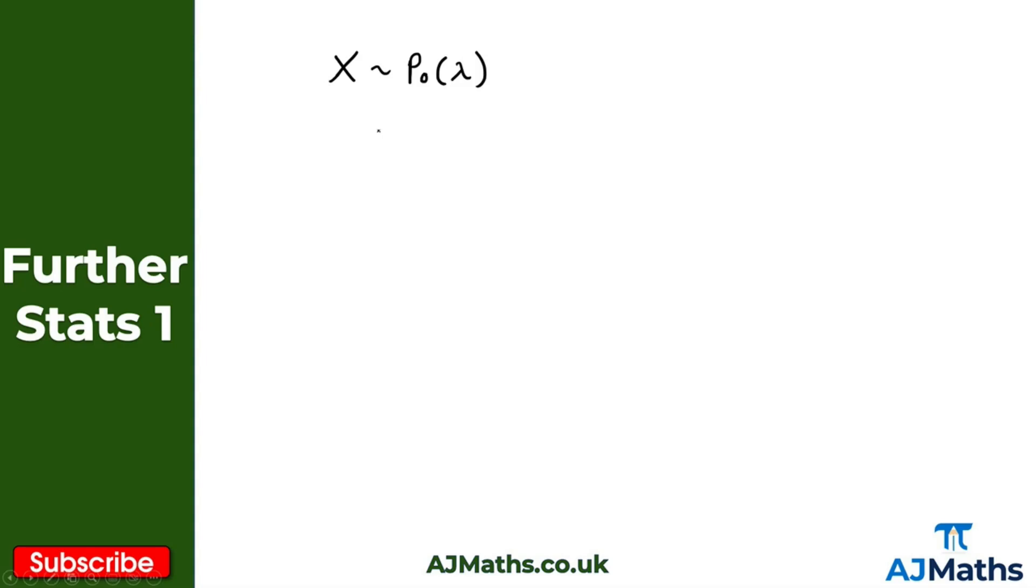So the formula that we use here to get our probability is, if we want the probability of our random variable here, x being equal to a given value of x here, so just a value that we pick, then the formula that we use is e to the minus lambda, so e to the minus lambda times by lambda to the power of x, and this is all divided by x factorial.